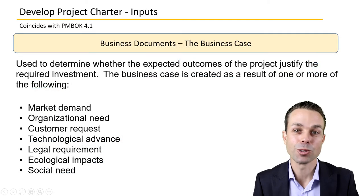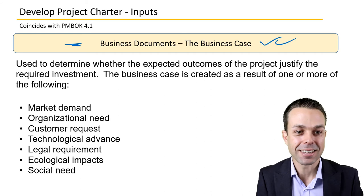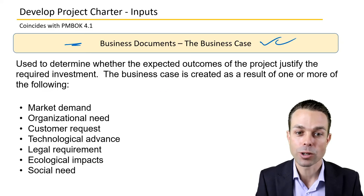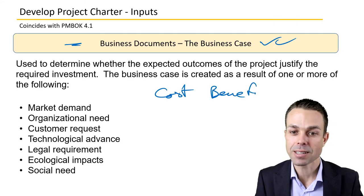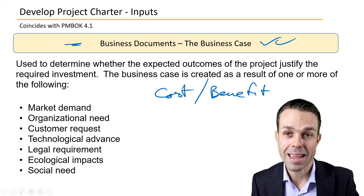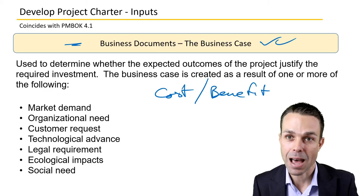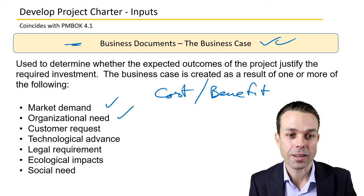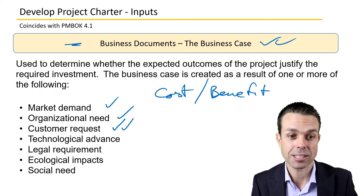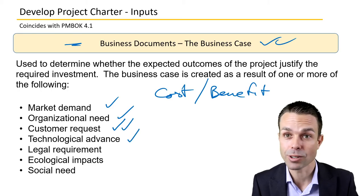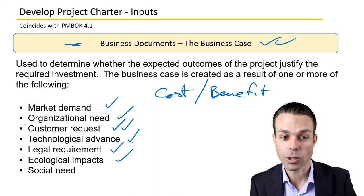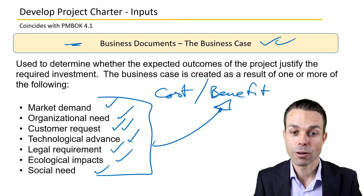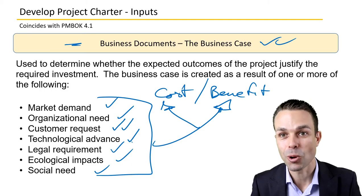Let's look at the inputs to develop project charter. We've got the business documents — the business case. This is used to determine the expected outcomes of the project and justify the required investment: what is the cost and what is the benefit? The project manager may need to work with the sponsor on this. We're looking at things like market demand, organizational need, customer requests, technological advances, legal requirements, ecological impacts, or social need. All of these might be associated with the benefits, but we also have to assess whether it's worthwhile to do.